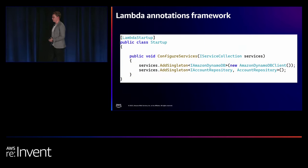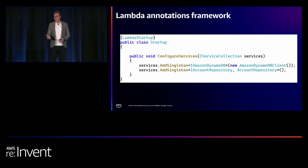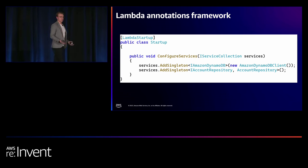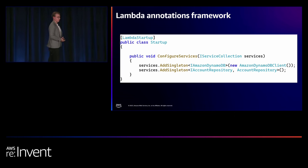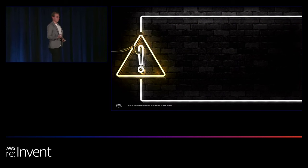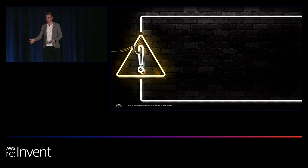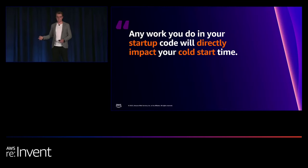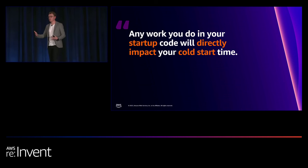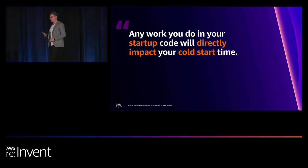Lambda Annotations also allows you to use dependency injection in Lambda. Your familiar startup.cs file lives on — you annotate it with LambdaStartup, and source generators wire up dependency injection automatically. A word of warning, though: just because you have access to dependency injection doesn't mean you should add a whole bunch of dependencies to your startup, because any work done in the startup phase directly impacts cold start time. That's typically why ASP.NET has slightly longer cold starts.